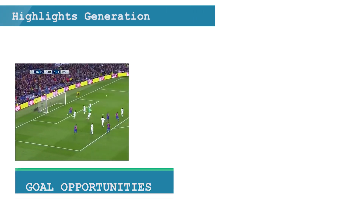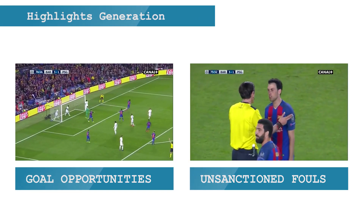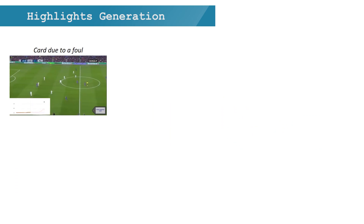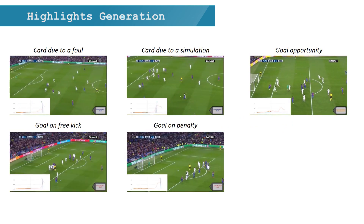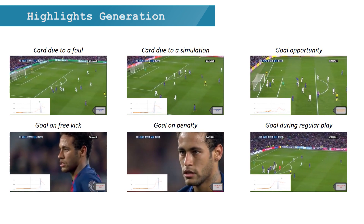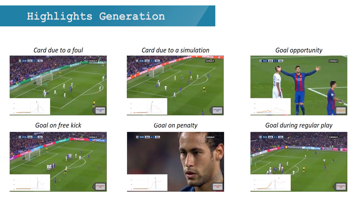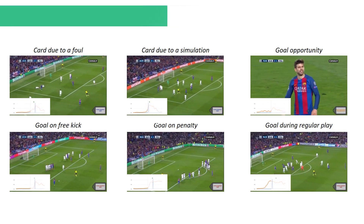As a use case, we chose to produce automatic highlights, since these kinds of actions — along with cards and goals — are often selected. By simply cropping the video around the detected actions and the peaks corresponding to unannotated goal opportunities and unsanctioned faults, and stitching the clips, we can create highlights of the game.